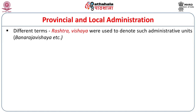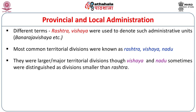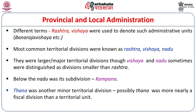Different terms were used in Chalukya inscriptions for territorial units, such as Rashtra, Vishaya (for instance, Banaraja Vishaya), and Nadu. The most common territorial divisions were Rashtra, Vishaya, and Nadu, with Vishaya and Nadu sometimes distinguished as divisions smaller than Rashtra. Below the Nadu was the subdivision Kampana. Another minor territorial division appearing in inscriptions is Thana, which possibly meant a fiscal rather than territorial division.